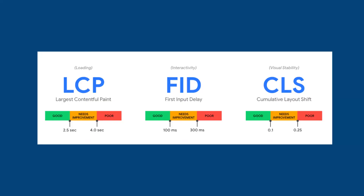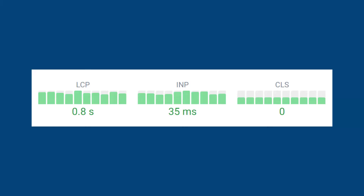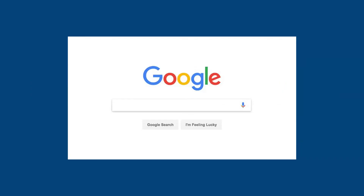Largest Contentful Paint, or LCP, is one of Google's core web vitals. These metrics measure the loading performance, interactivity, and visual stability of your website. Having good scores across these metrics is vital to providing a great user experience for your website's visitors and ranking high in Google search. In this video we're going to look more in depth at what LCP is and different examples on how to improve it.